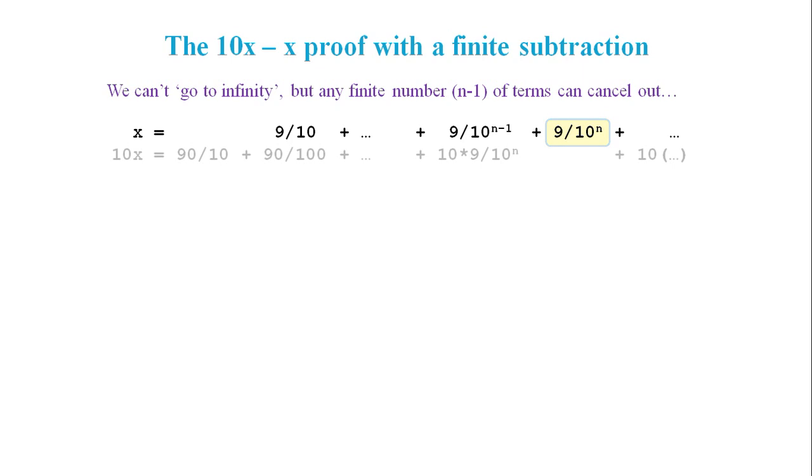On the next line, we multiply throughout by 10 and we line up the terms that will cancel out. We can see that in total, n minus 1 terms will cancel out.